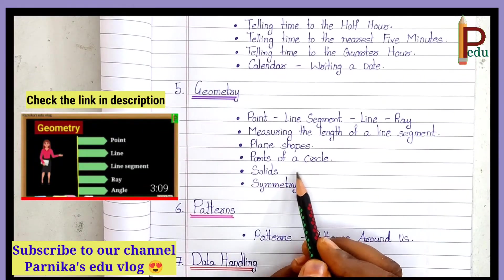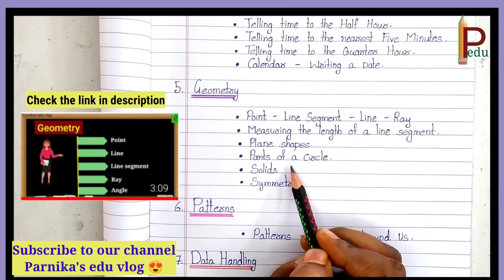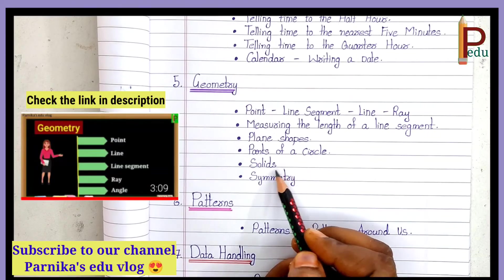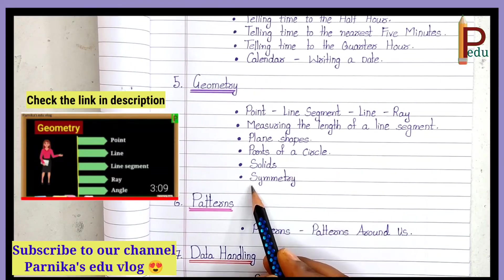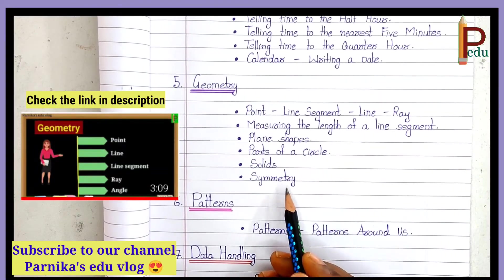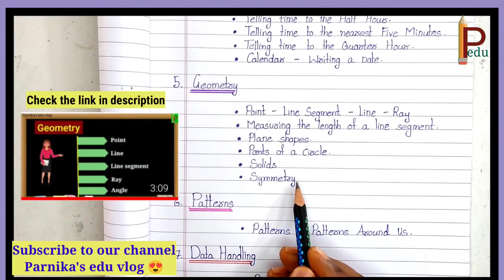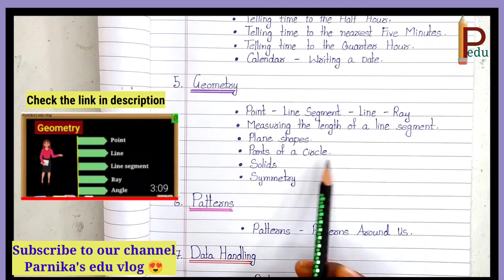Next, Solids — three-dimensional shapes like Cuboid, Cylinder, Cone. Next, Symmetry — what makes figures symmetrical. This is all about the Geometry chapter.